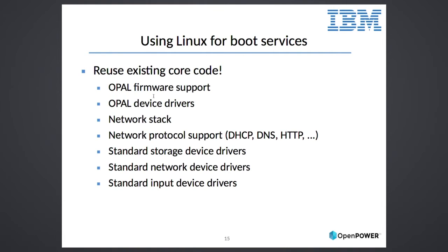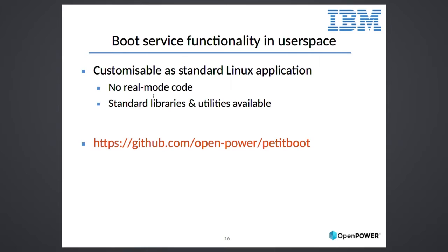By using Linux here, we can reuse all of that existing core code that is already out there in the community — we don't need to rewrite that for our specific firmware. We have the OPAL firmware support, the device drivers, the network stack, all the network protocols, all the disk drivers — all the bits that we would need to write boot services. Rather than writing it, we just borrow them from Linux and have that as our boot loader. One of the benefits of doing this is that rather than having fairly hard to debug firmware code as your boot services, it's now just all user space code. So anyone familiar with developing Linux user space applications is now able to alter the boot loader simply by working on this Petty Boot project, which is a standard user space application. Again, open source — it's in our GitHub repository for OpenPower.